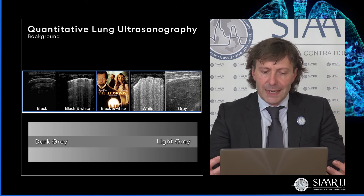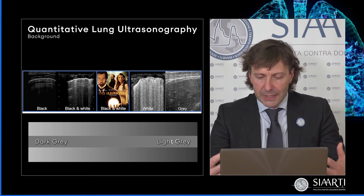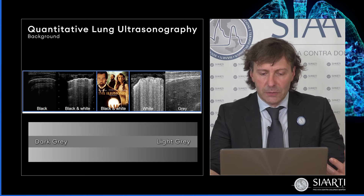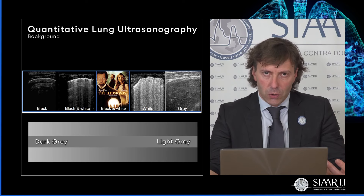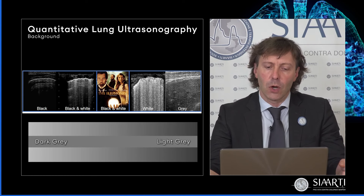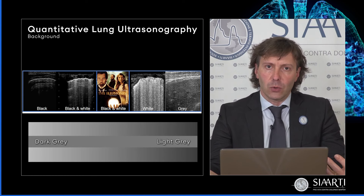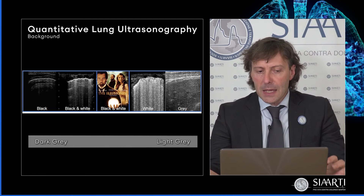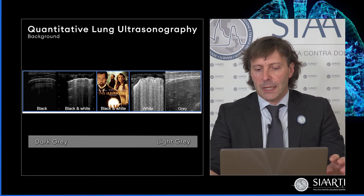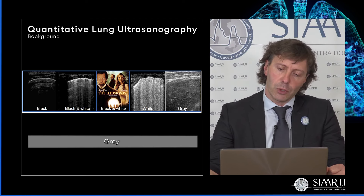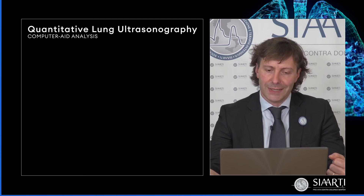Se voi vi focalizzate su questa linea centrale scura, che potete immaginarvela come una linea B, vedete in realtà che quello che si modifica non è il tono di questa linea, non è tanto il tono in sé del nostro finding ecografico, quanto semplicemente la sfumatura del fondo, che potrebbe essere il parenchima polmonare. Qualunque software non cade in questo inganno, perché in maniera molto semplice è in grado di differenziare a livello pixel per pixel dalle 255 sfumature di grigio e di quantificarle.